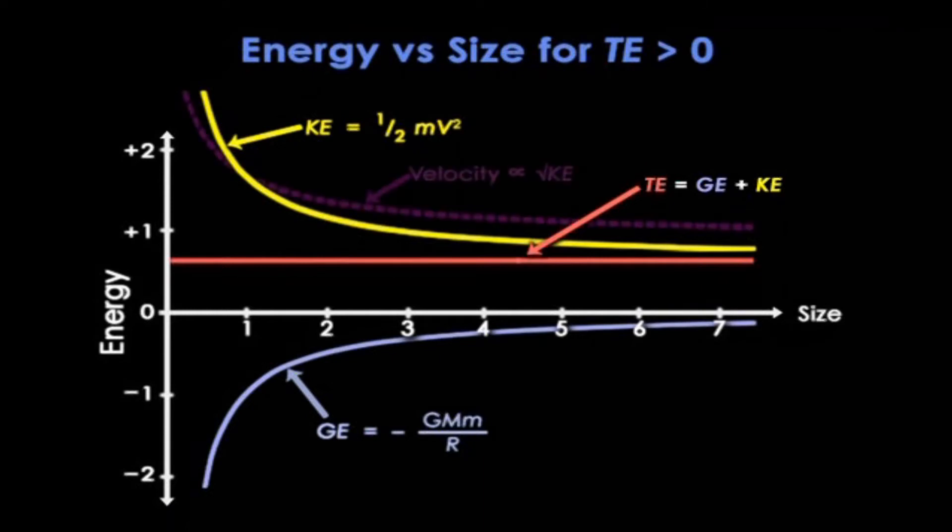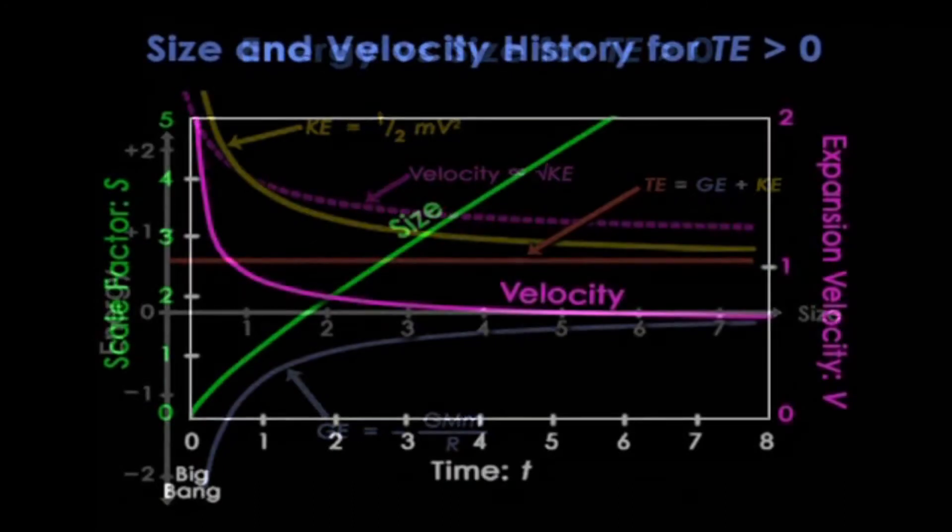Taking its square root gives us the expansion speed, which converges to a constant value. Here are the graphs against time. After a little bit of deceleration, the size continues to increase at a constant rate as the velocity settles on its final value. After the universe got its launch, it just coasts with too little gravitational force to slow it down.